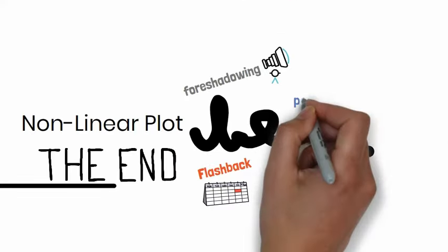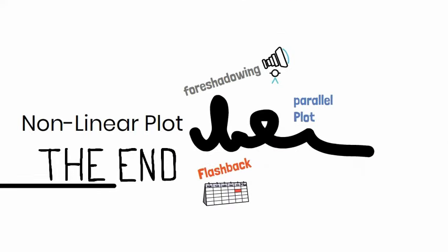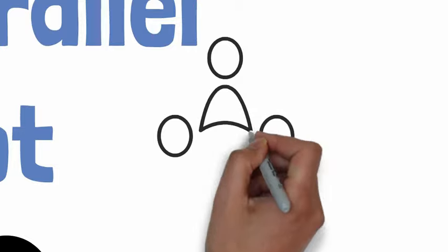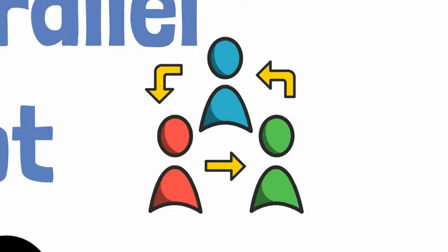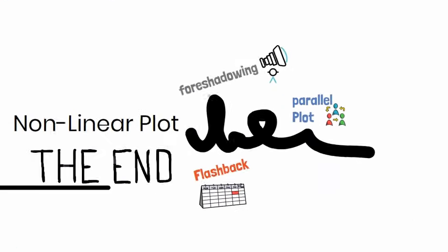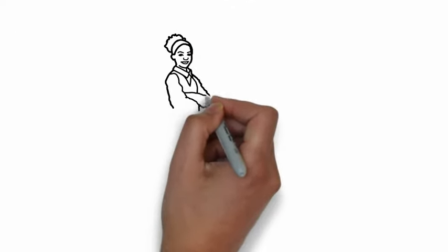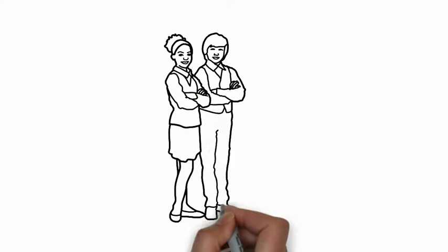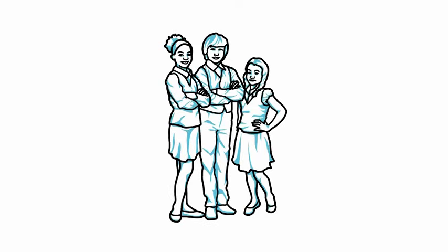Parallel plots occur when the author develops two or more simultaneous plots connected by character, event, or theme. Subplot is a secondary story in a narrative that adds complexity and depth and connects to the main plot in the context of setting, character, or theme.